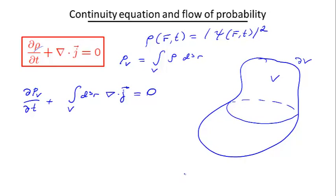Now, at this stage, I can use Gauss's theorem to handle the second term, which tells me that the integral of a full divergence over a volume is equal to a flux of the vector.